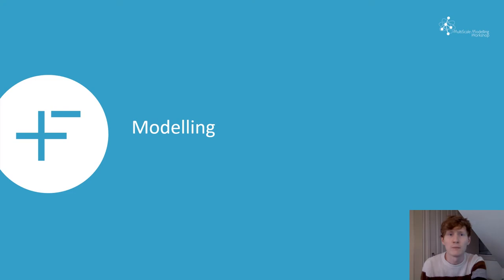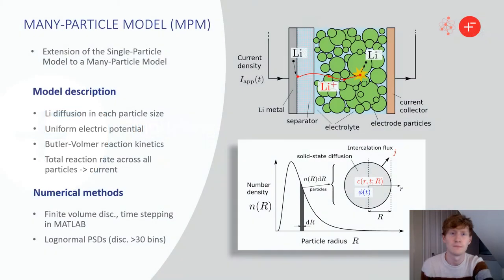So, the modelling. The main model that we considered, we refer to as the many particle model. That's because it is a direct extension of the single particle model to many sized particles. It assumes that the transport of ions through the electrolyte is fast, so all the particles of the same size behave in the same way, behave in unison, even if they are at different cell locations. Different sizes behave differently, so you need a representative particle of each size.